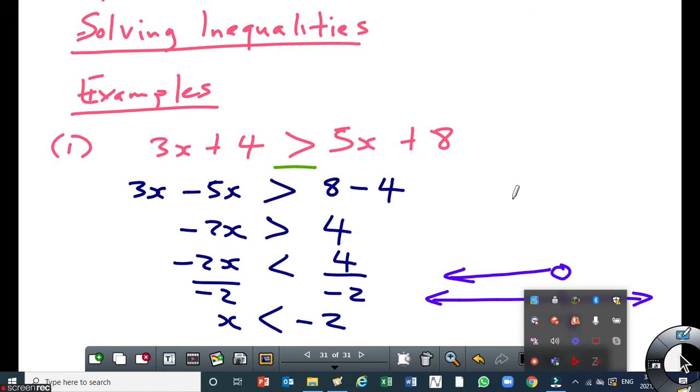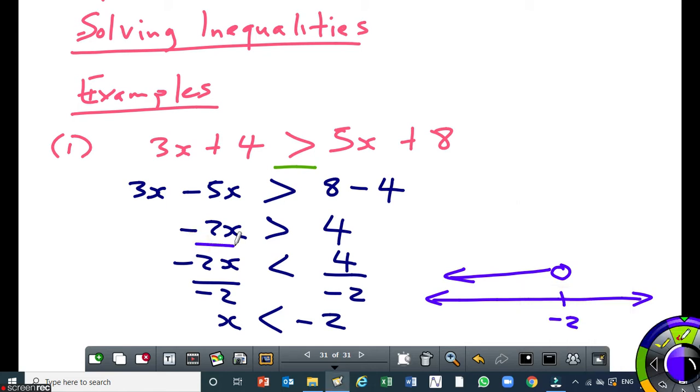So, what happened here, we divided by a negative coefficient there, and the sign changed from being a greater than sign to a negative sign. And then we represented the answer on a number line. Let's take the next example.